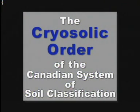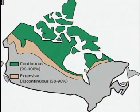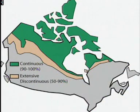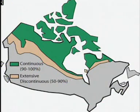Cryosolic soils occupy much of northern Canada and are the most extensive soil order in the country. Cryosols have permafrost within one meter of the surface, or within two meters of the surface where they display disruption of horizons by frost churning or cryoturbation. Mean annual soil temperature is less than zero degrees Celsius. It is important to remember that permafrost is not a specific material but instead a thermal condition in which soil or rock remains below zero degrees Celsius for at least two years.